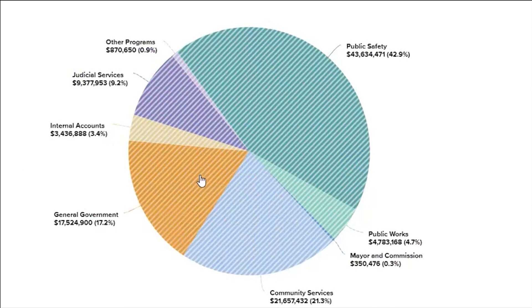17.2% of the county pie goes to general government, which covers administrative departments such as HR and finance for the county.